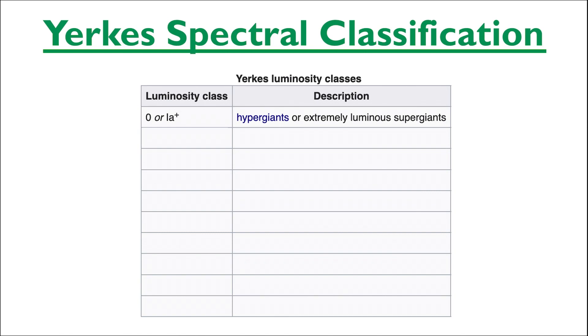Below that, we have 1a and 1b for the luminous and less luminous supergiants, meaning that any star labeled as luminosity class 1ab is somewhere in the middle as an intermediate-sized luminous supergiant. Then we have class 2 bright giants, class 3 normal giants, class 4 subgiants,